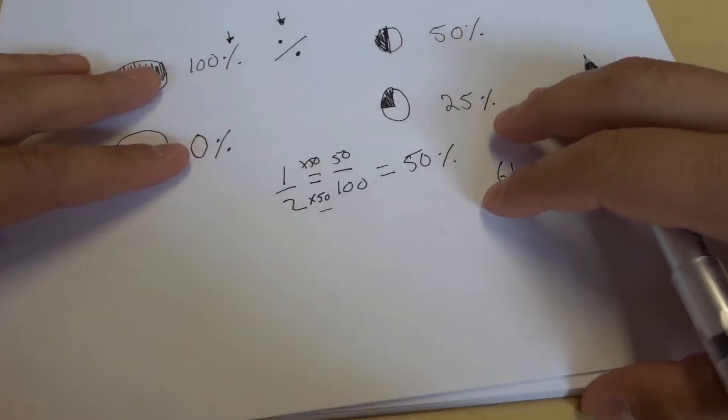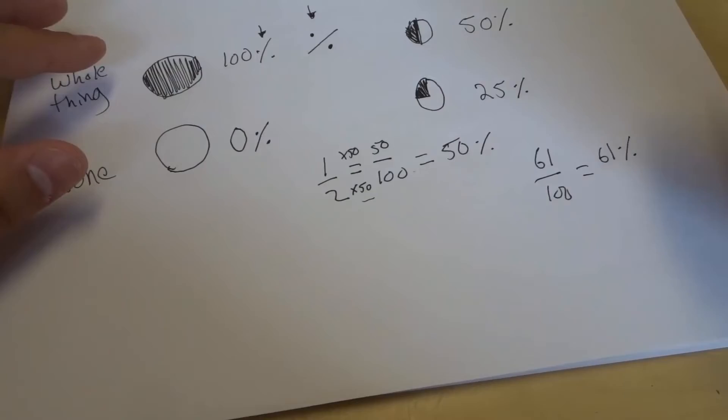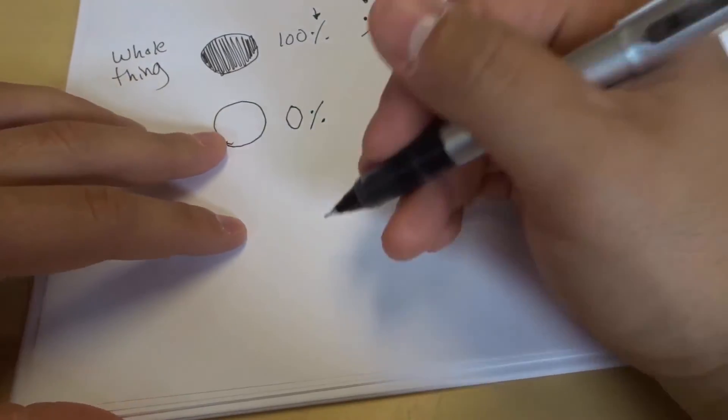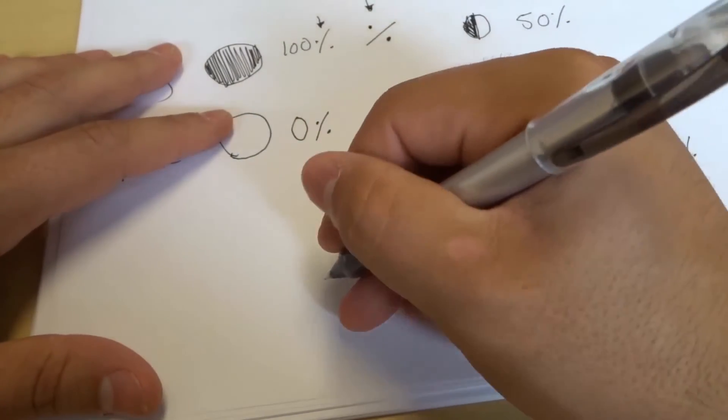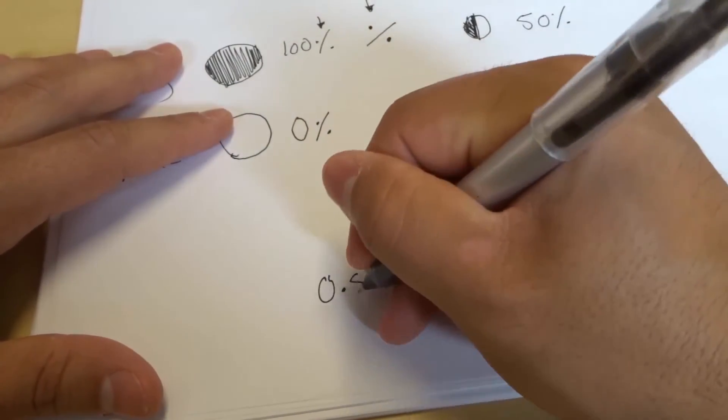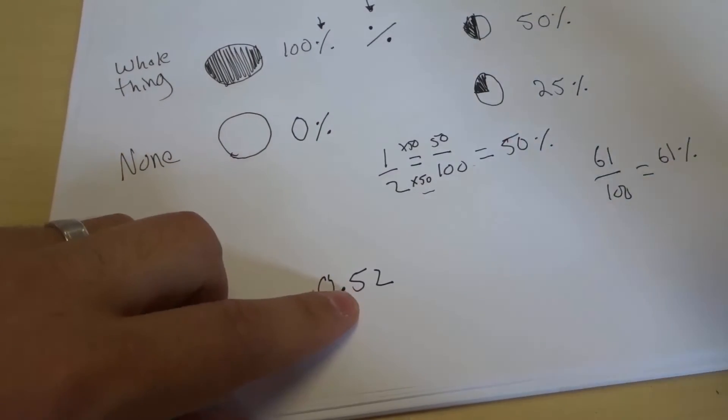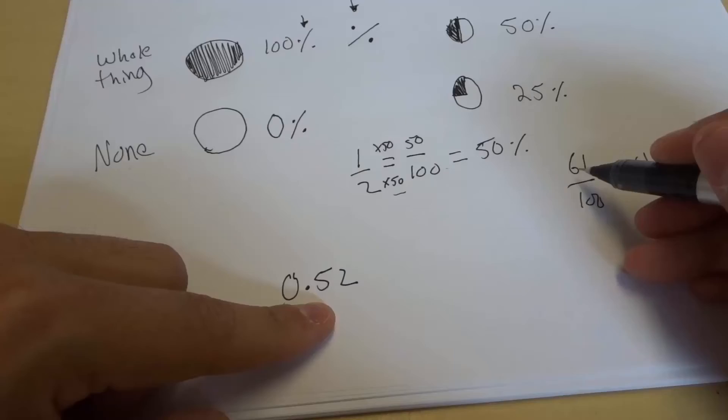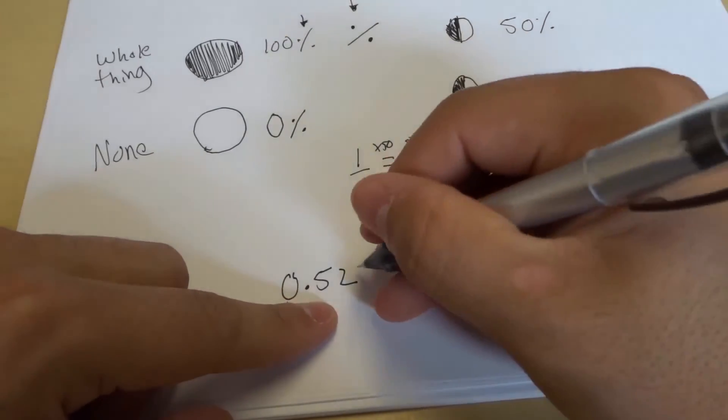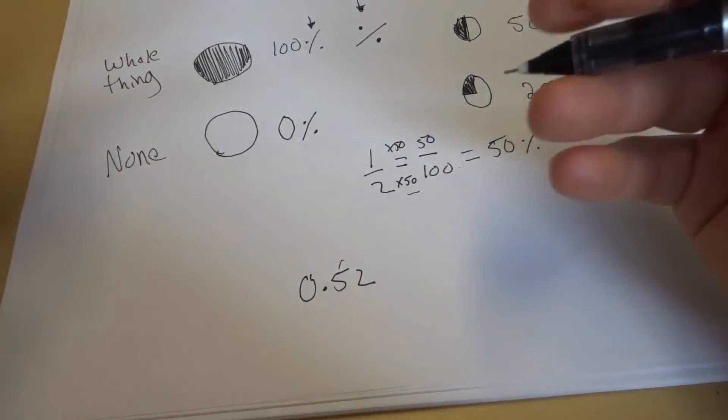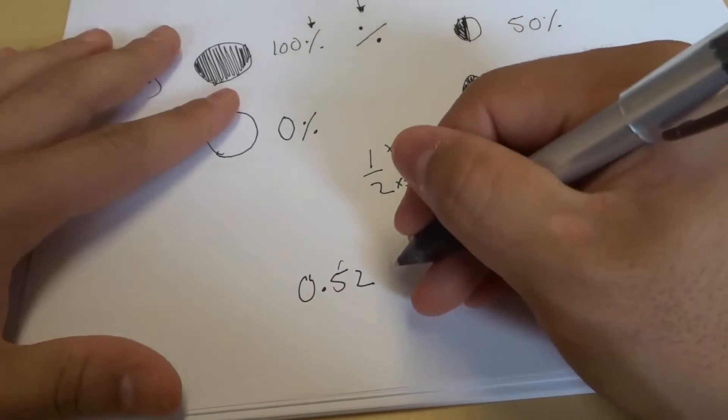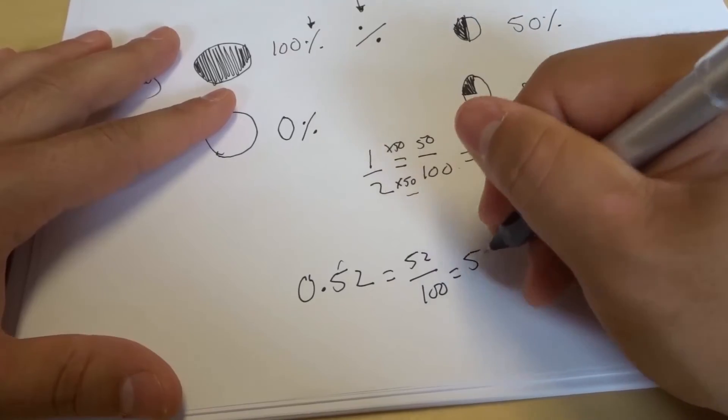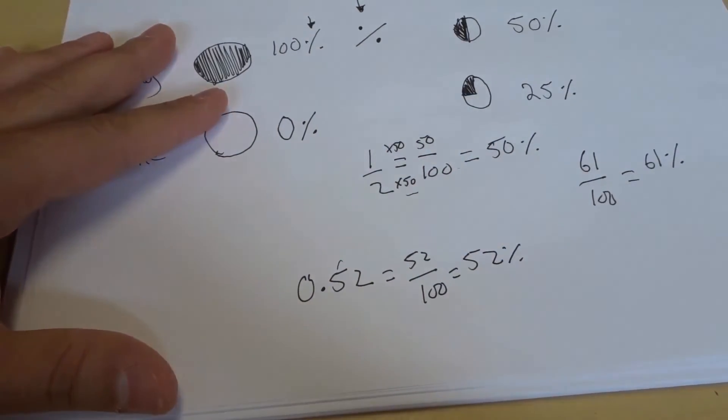And if you want to convert something like a decimal into a percentage, what you can do is you can look at how many places after the decimal you have. So let's say you have a number like 0.52. If there are only two digits after the decimal, just like this one over here, there's only two digits, then that's going to be your number as your percent. So 0.52 is the same as 52 out of 100, which is the same as 52%. Very simple.